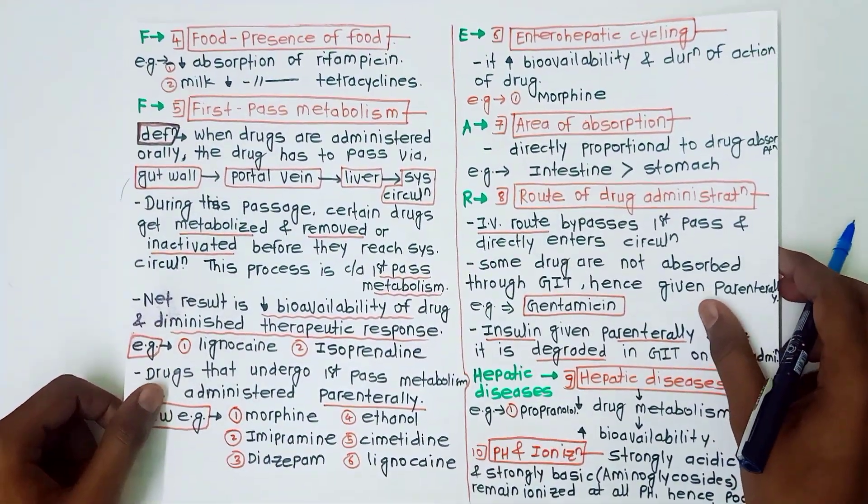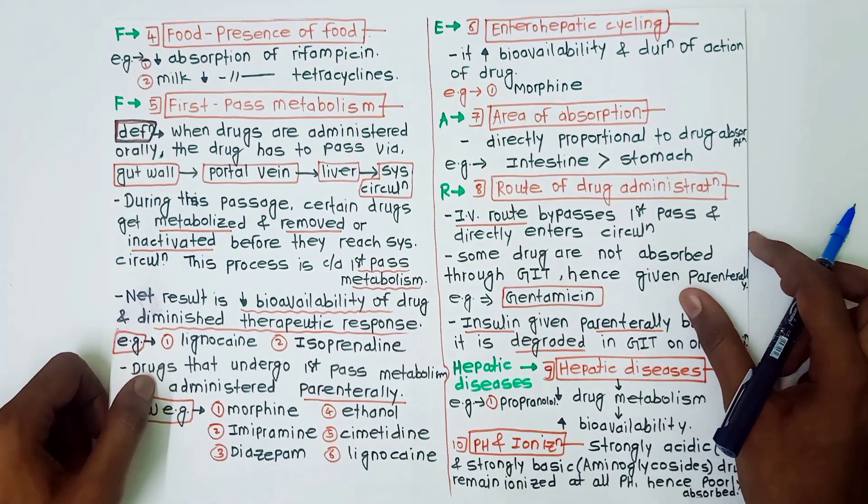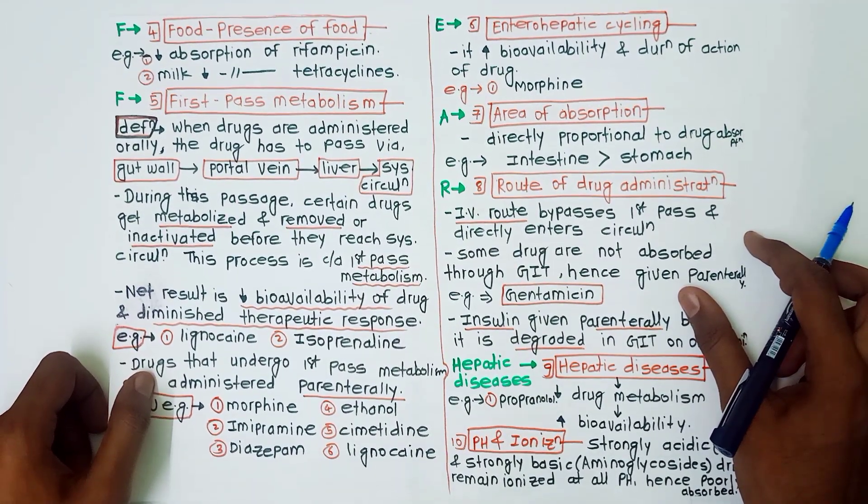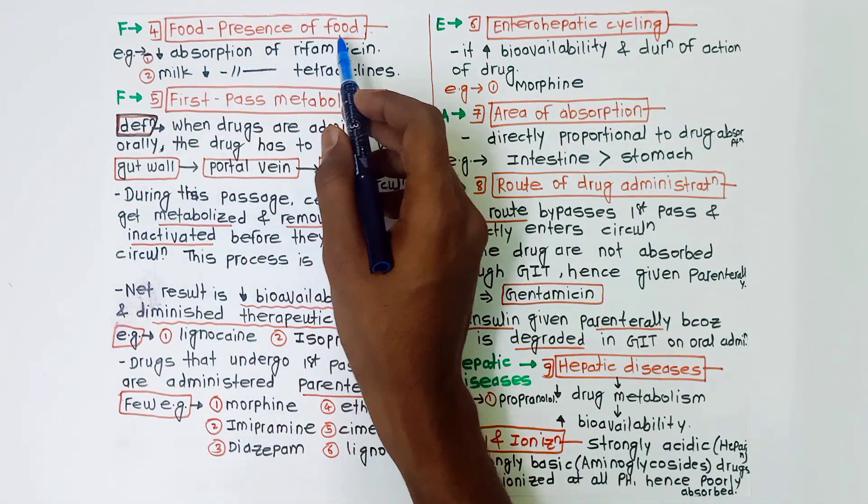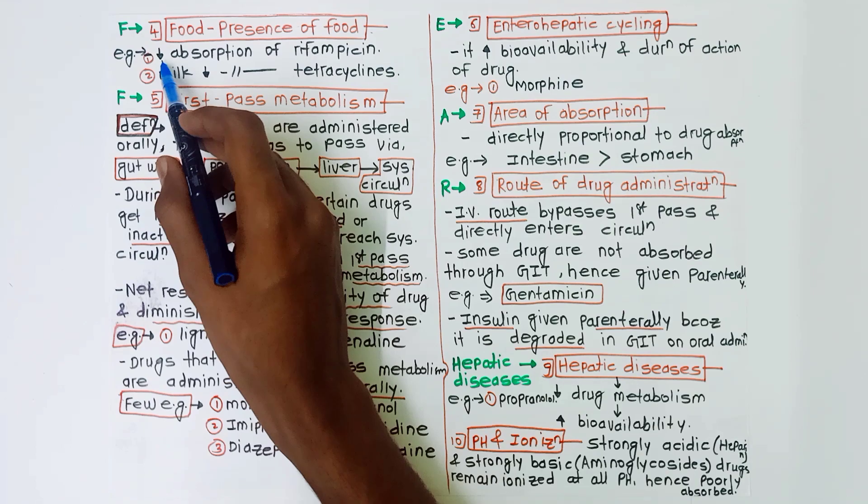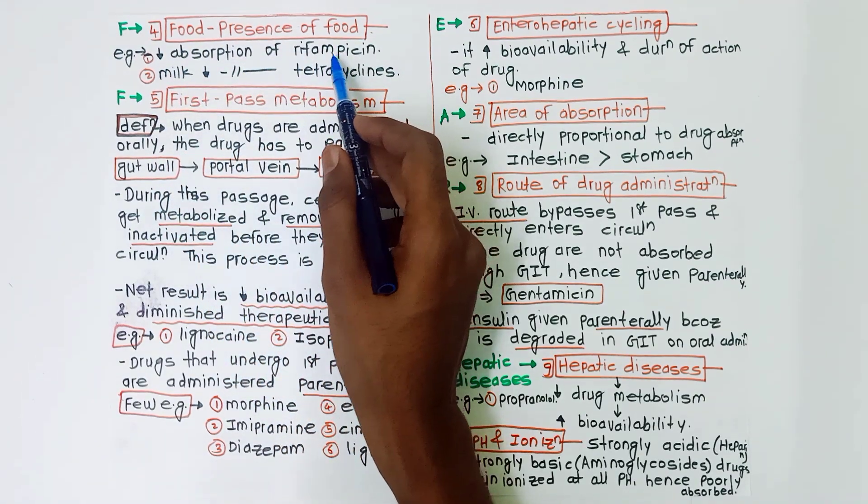Next factor is F for food, that is presence of food. Example: presence of food decreases absorption of rifampicin and milk decreases absorption of tetracycline.